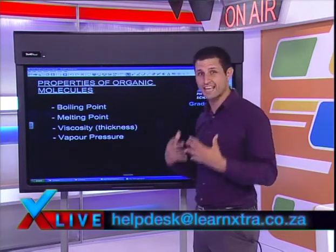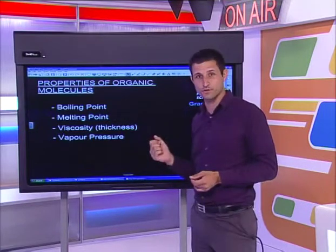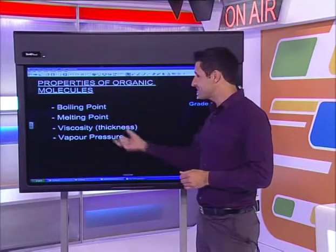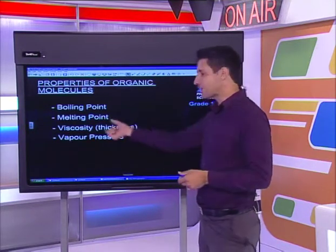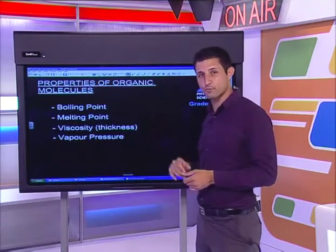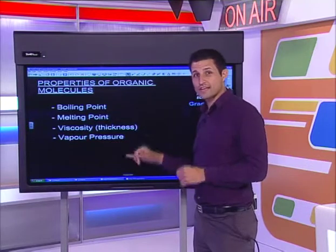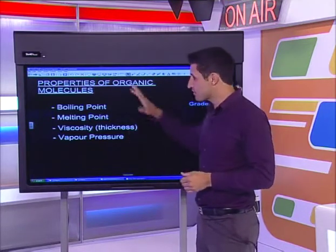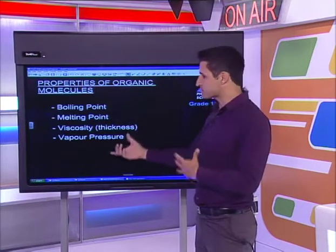I've made a list of physical properties which you can be tested on in exams: the boiling point, the melting point, viscosity - which is a word not many people are used to - and vapor pressure. I'm going to focus mainly on boiling and melting point. Perhaps if we have time, I can discuss why some substances are very thick, like syrup or honey, and why oil is very difficult to pour. Just remember that viscosity is a thickness, while vapor pressure is a substance's desire to become a gas - the pressure given out by that substance to go into a gaseous phase.